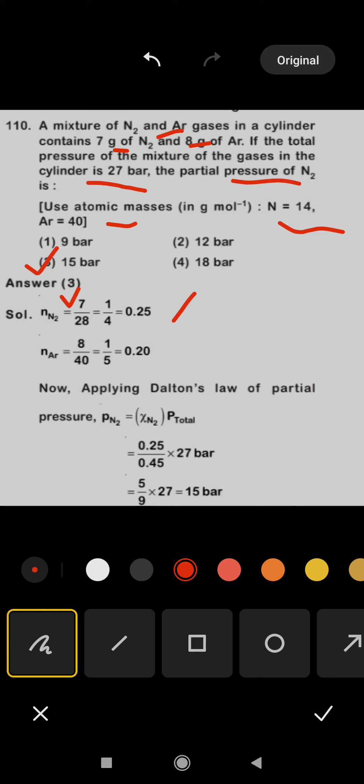So we have 1 by 5, which is 0.20. Now applying Dalton's law: according to Dalton's law, sum of all partial pressures equals total pressure. So p nitrogen equals x N2 times p total, then 0.25 upon 0.45 equals 27.